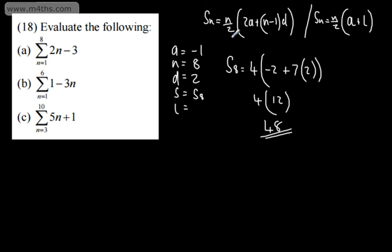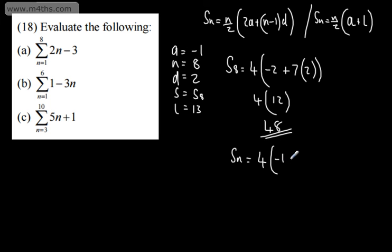If you wanted, you could have found L first. Substituting n equals 8: 2 times 8 minus 3 gives 16 minus 3, which is 13. Using the a plus l method, the sum is 4 times (a plus l), which is 4 times (negative 1 plus 13), giving 4 times 12, which is again 48. You can use either formula.